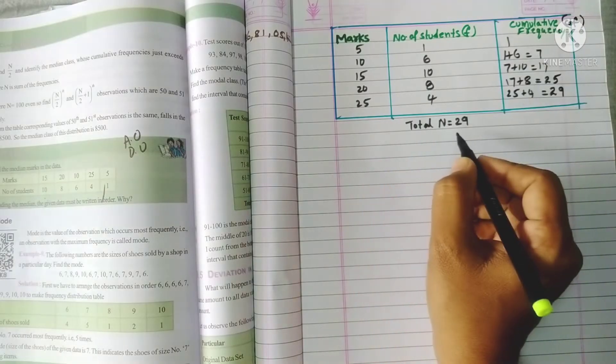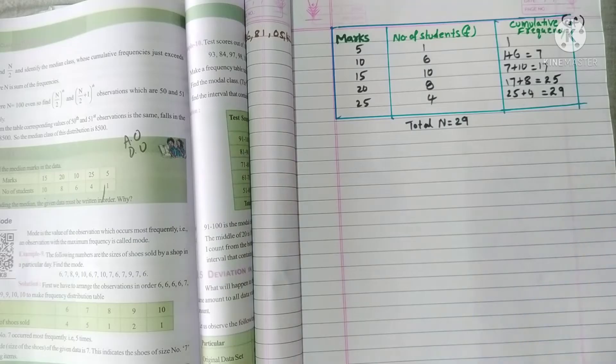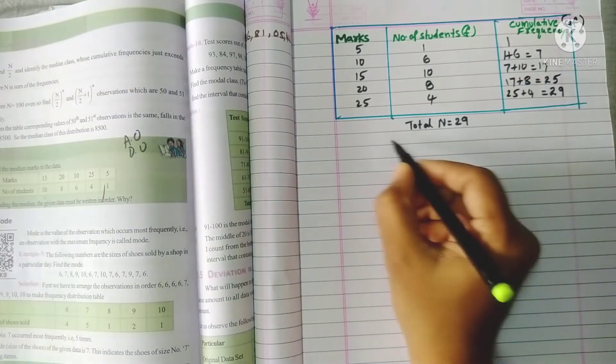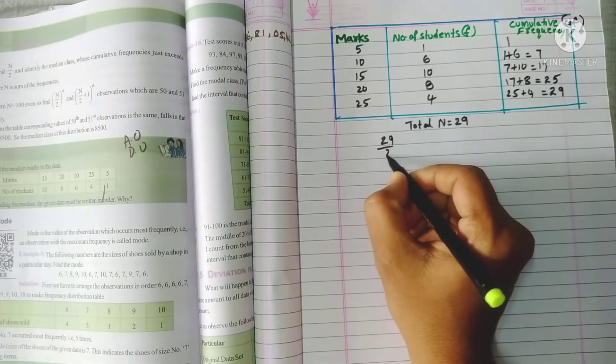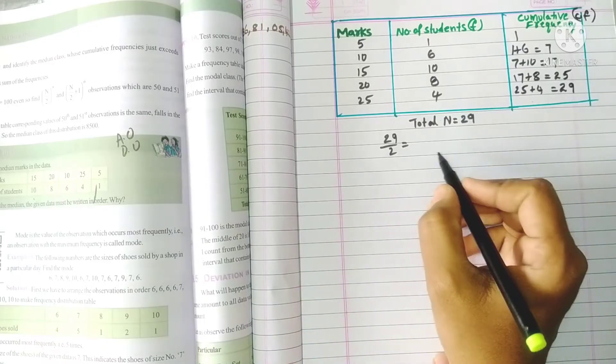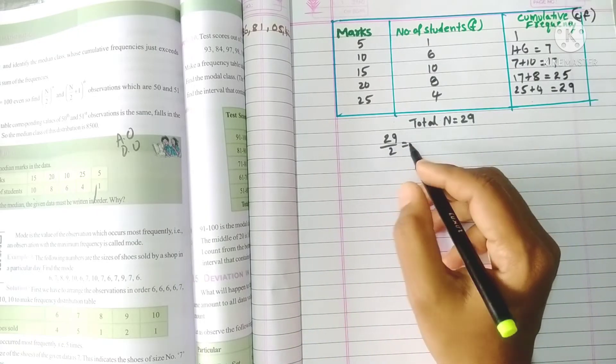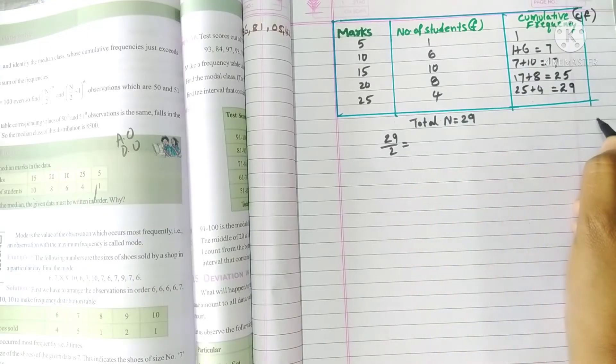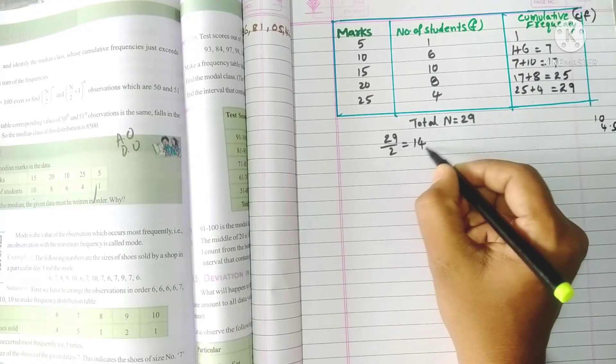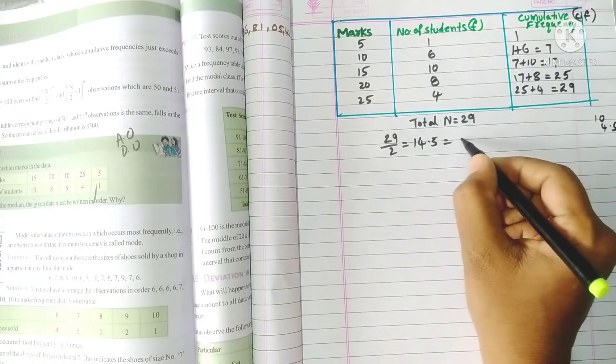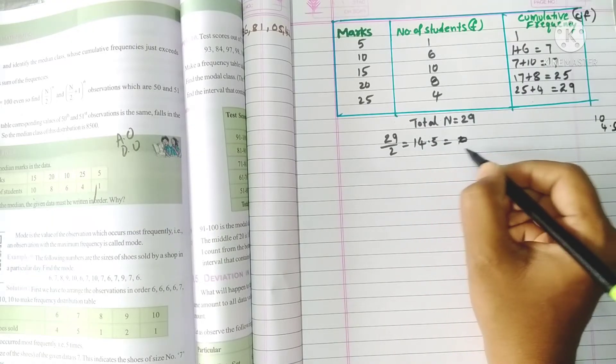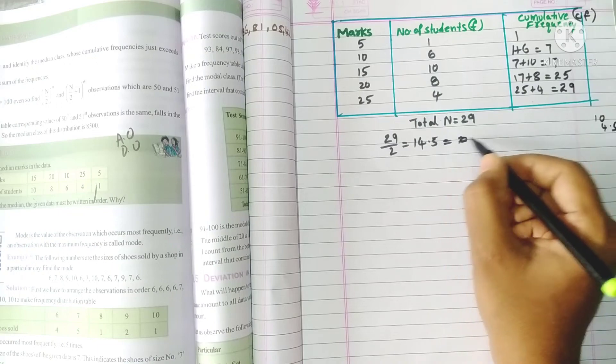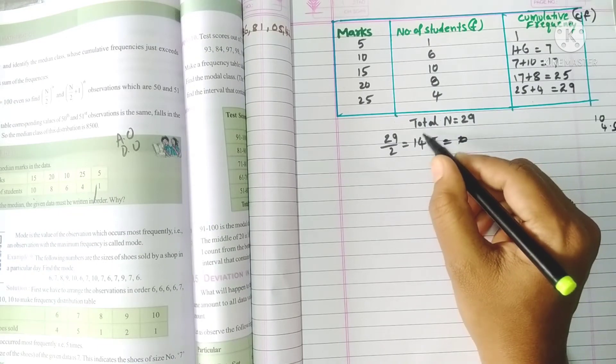n by 2, if we calculate, what is the half of 29? 29 by 2. Half of 20 is 10, half of 9 is 4.5, so this is 14.5. If we adjust this to nearest value, it will be equal to or greater than 15.